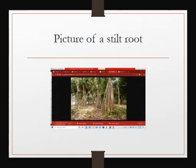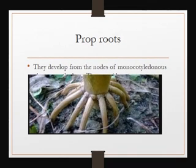Mangrove trees have both breathing roots and stilt roots. In the picture, you can see those long structures coming down — those are stilt roots. Prop roots and stilt roots are almost the same; the only difference is that prop roots are nearer to the base and near the ground, while stilt roots can develop even from branches and are taller.